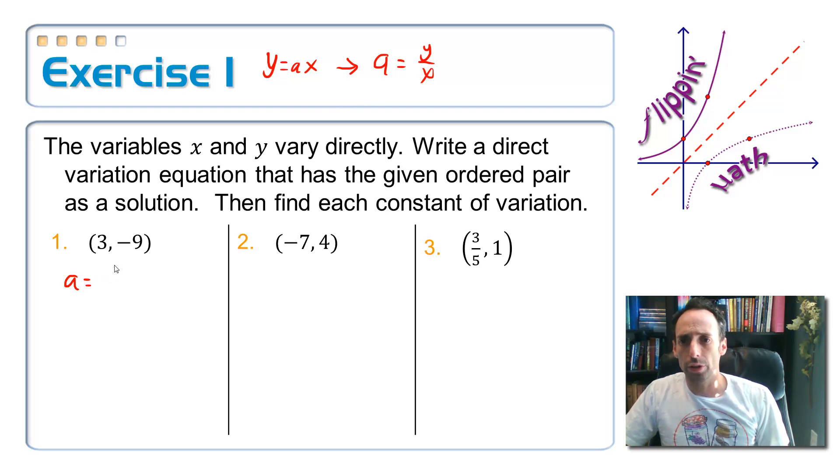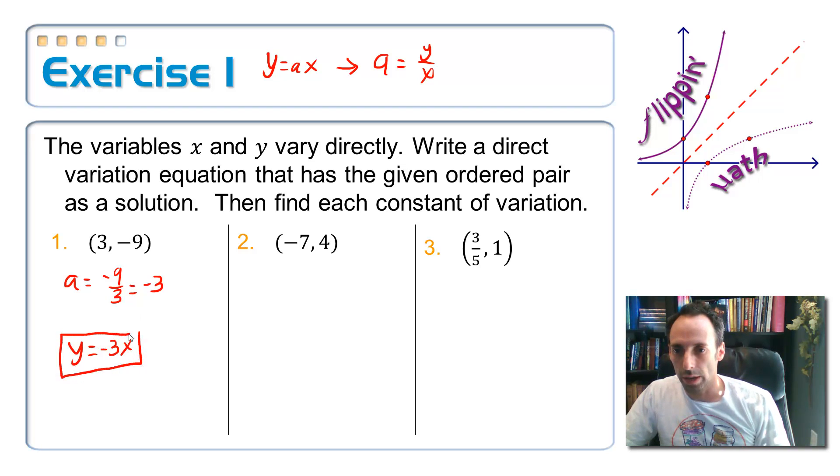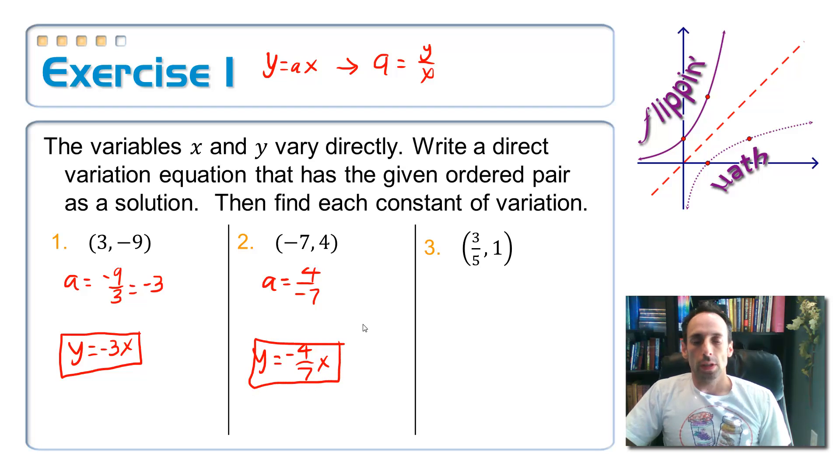So on this one, my a value is negative 9 over 3, which is negative 3. So my direct variation equation is y equals negative 3x. And it's done. Okay, on number 2, my constant of variation is y coordinate 4 over negative 7. You can bring that negative out front if you wanted to. And write in the equation, y equals negative 4 sevenths x.